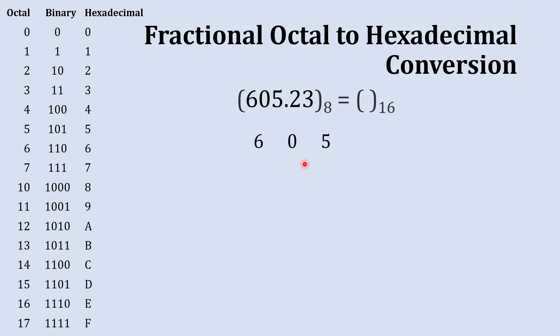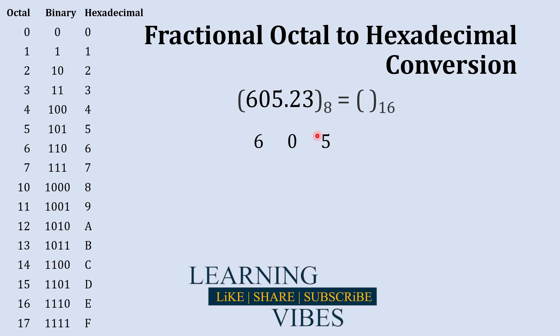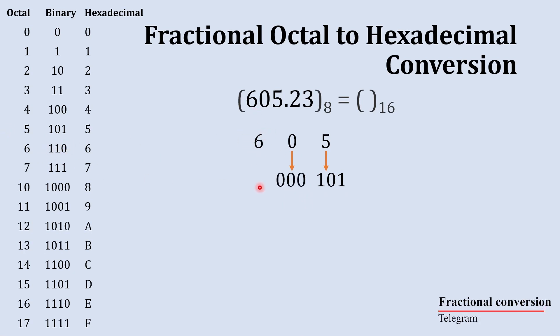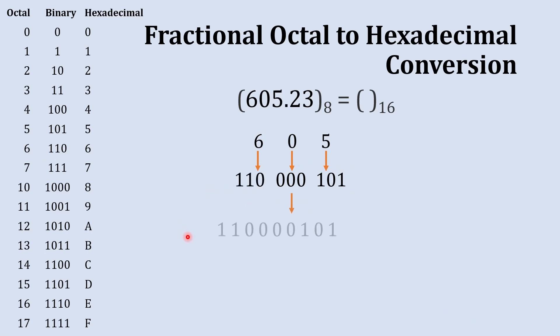In the first step, we convert this octal number into binary. Each single-digit octal number can be represented using a three-digit binary number. The binary equivalent of 5 is 101, of 0 is 000, and of 6 is 110. Combining these together, our binary number is 110 000 101.